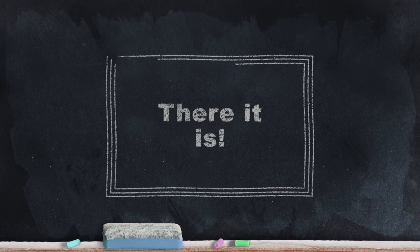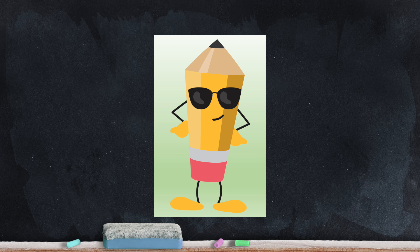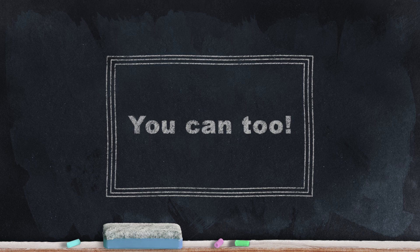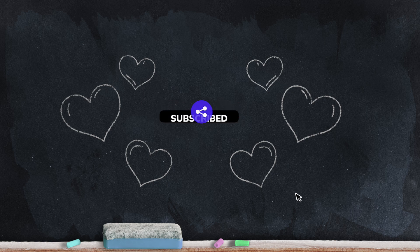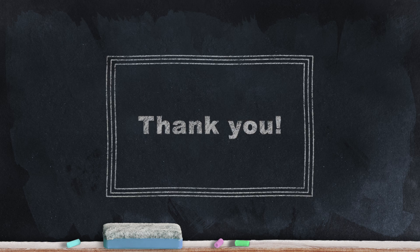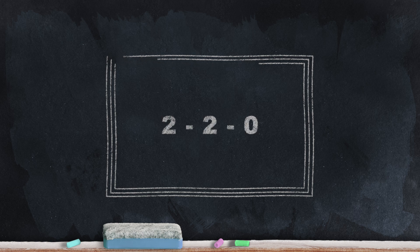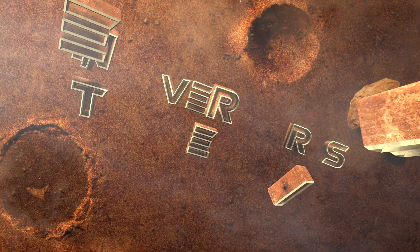And so there it is. Percival the pencil found the facts for the fact family one, one, and two, and how they looked using three math tools. You can do the same thing to figure out addition and subtraction facts on your own. Teachers and homework helpers, if you found this video valuable, please don't forget to like and subscribe. And if you think someone else might find this useful, feel free to share. Thank you so much for watching. I'll see you next time when we look at the fact family two, two, zero. Take care and remember, it never hurts to be nice.